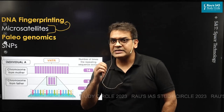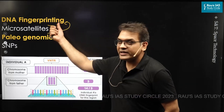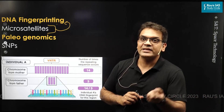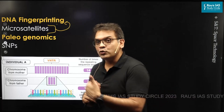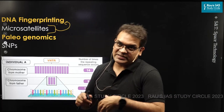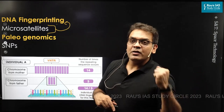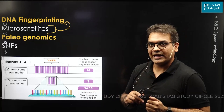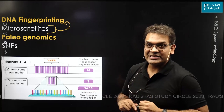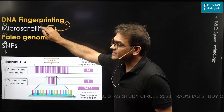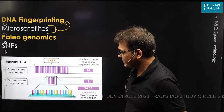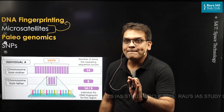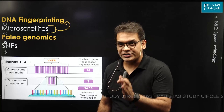DNA fingerprinting is something you've all heard of. What does DNA fingerprinting do? It identifies an individual within a species. That is why DNA fingerprinting is used to identify a criminal by picking up genome traces at a crime site, or also to establish parentage. The basics behind DNA fingerprinting is this: there are certain patterns in your genome.